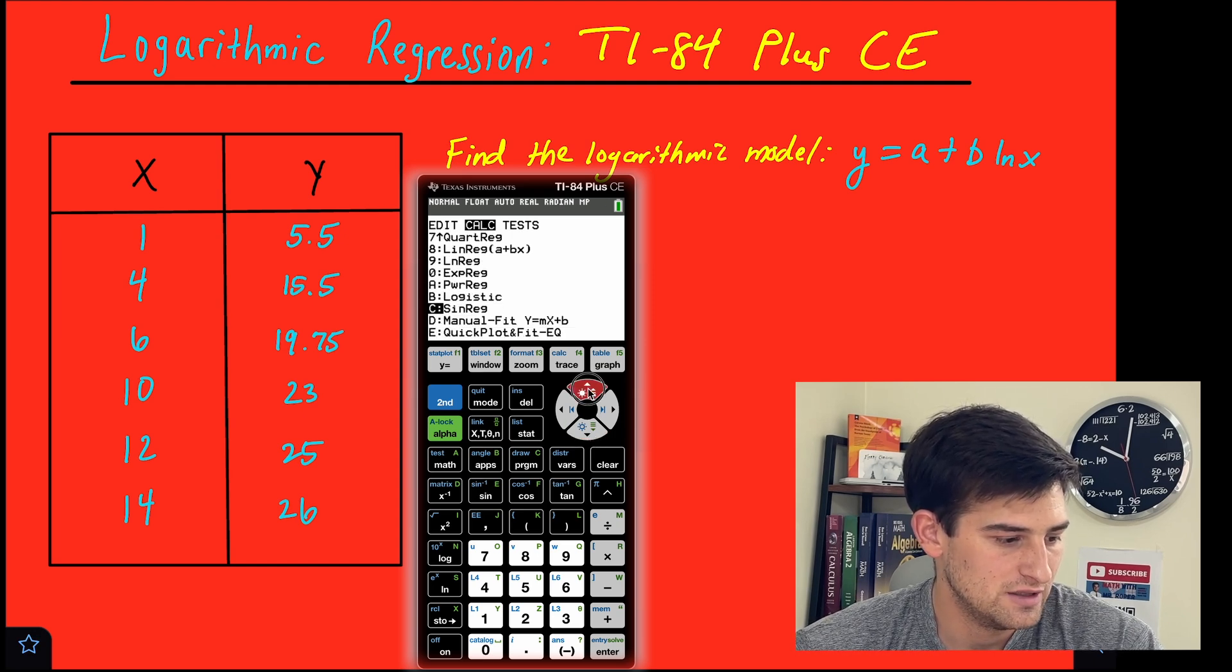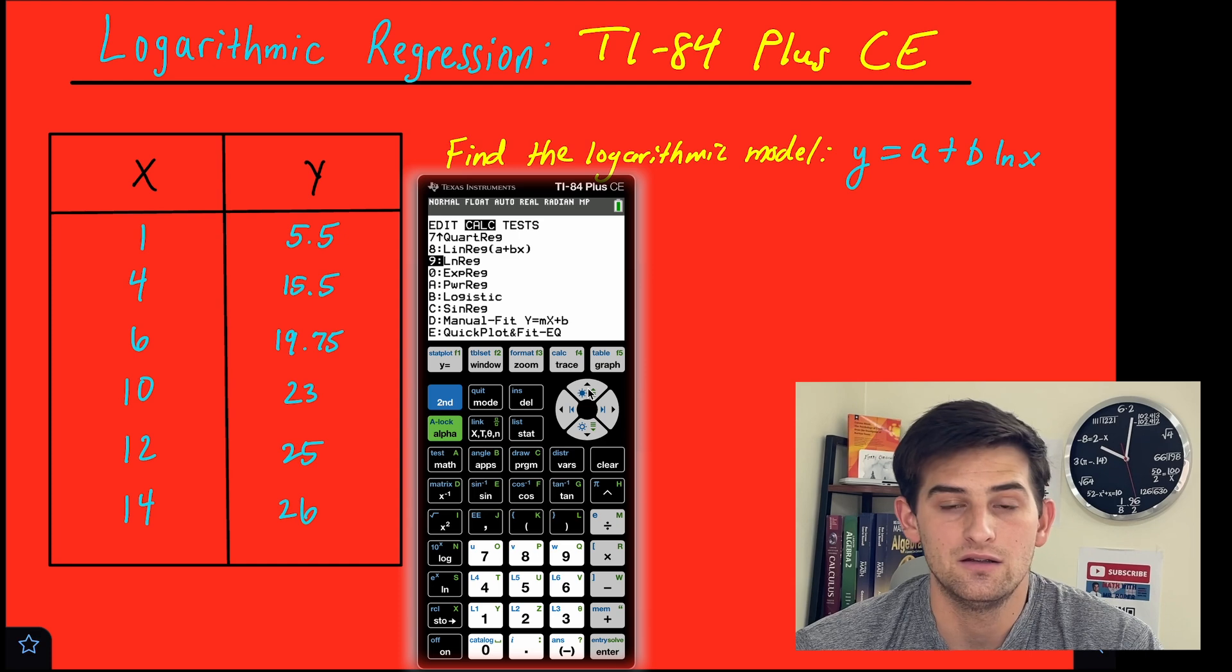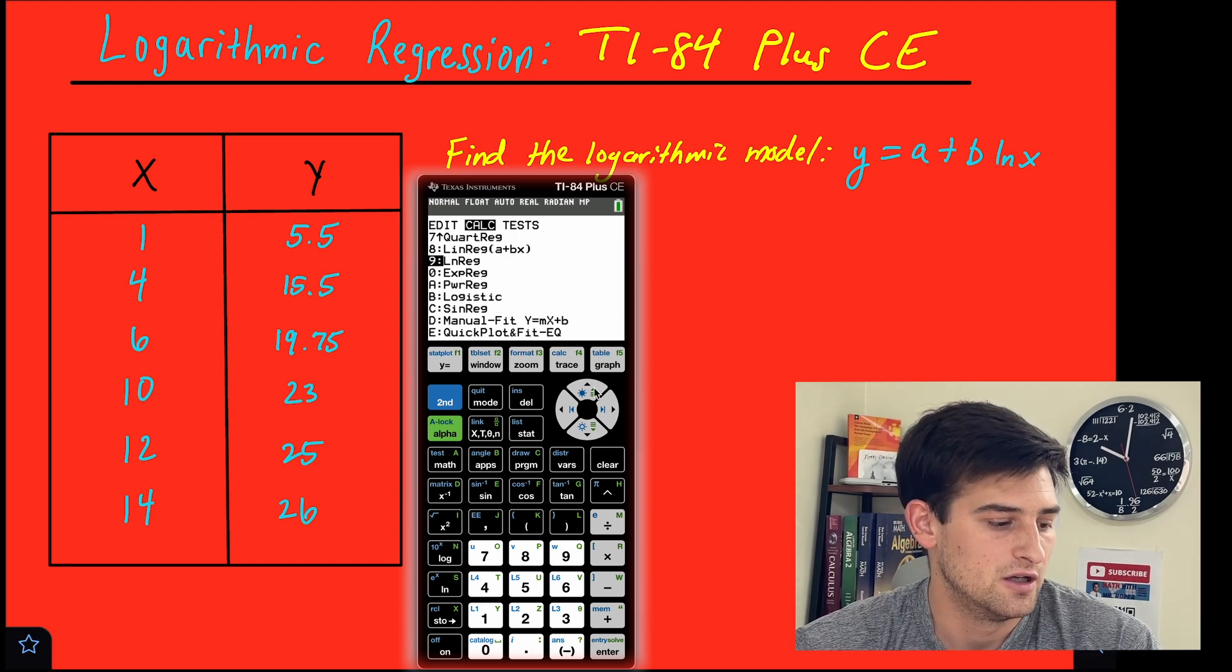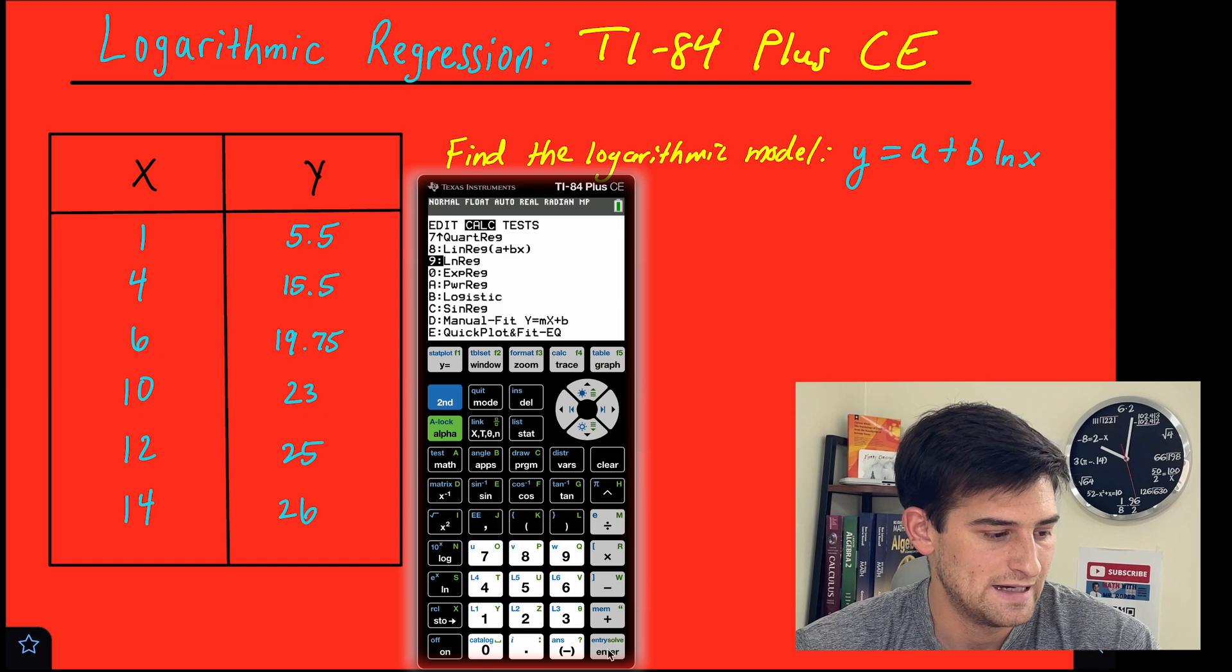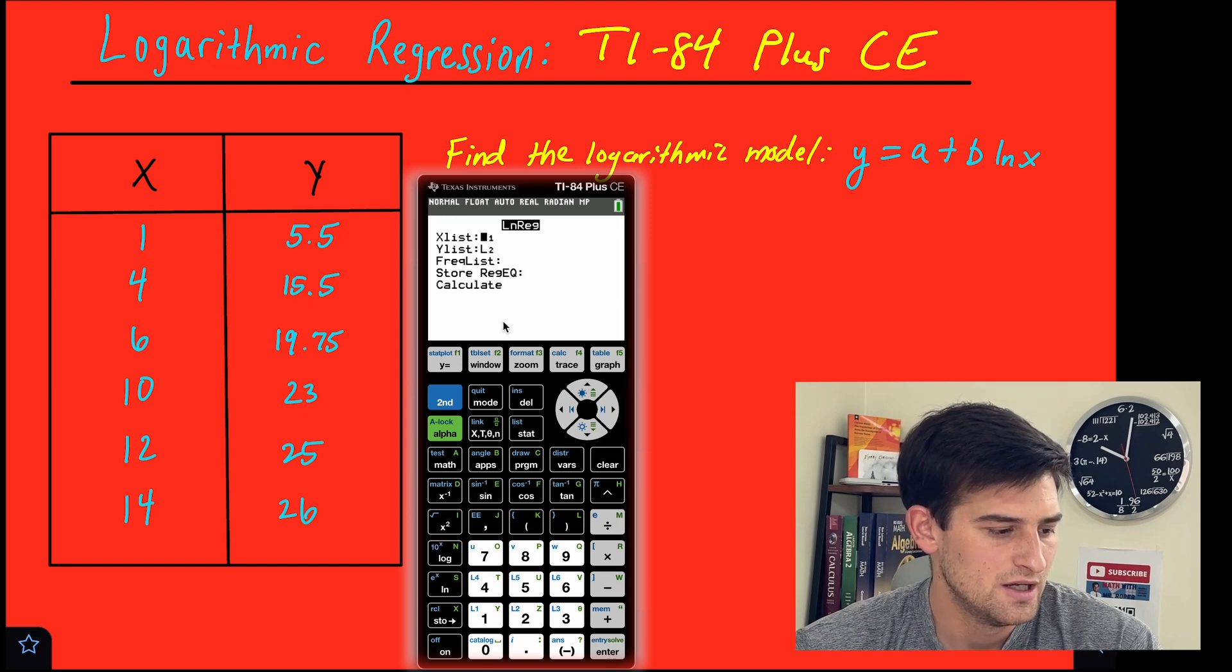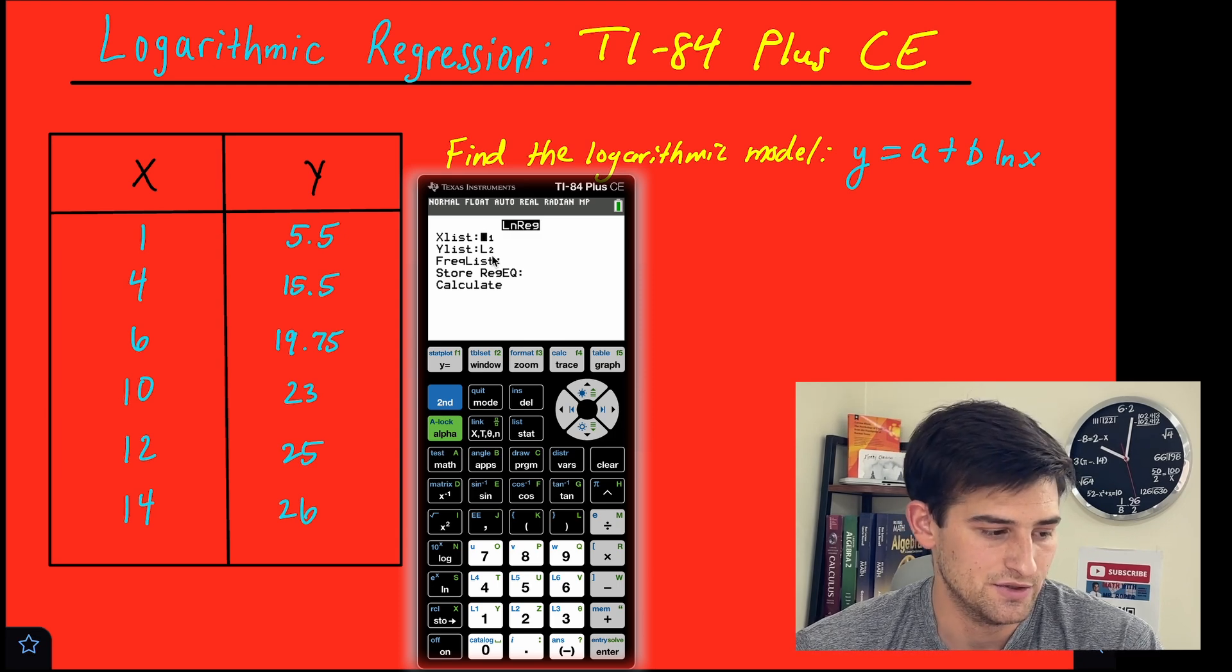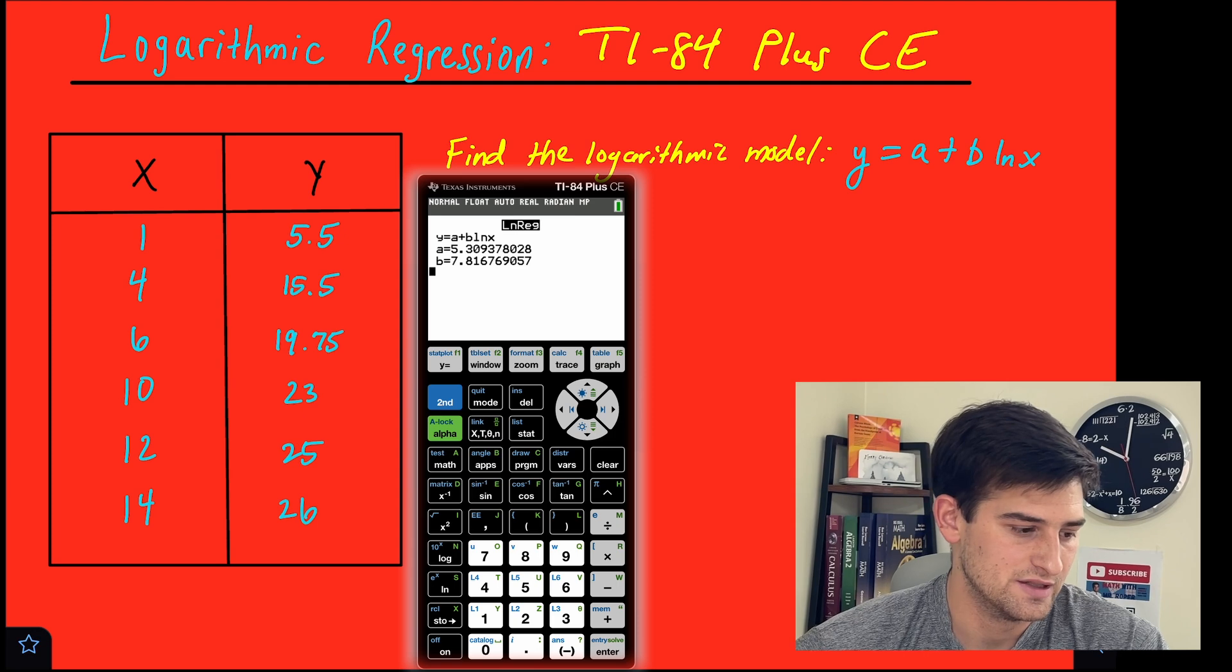And so what we need to do is go to ln regression, right? Because ln is just a natural log, so it is still logarithmic regression. So we want to choose number nine there. We hit enter. Make sure x list is L1 and y list is L2, because we typed our x values in L1, and we typed our y values in L2. So now we just go down to calculate and let the calculator do its thing, okay?